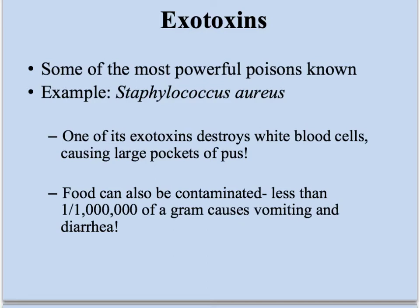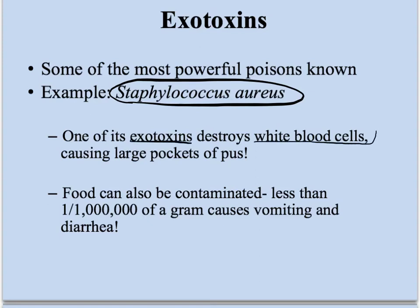Exotoxins are some of the most powerful poisons known. Staphylococcus aureus — one of its exotoxins destroys the white blood cells, which is why there's so much pus in staph infections. With Staphylococcus aureus, the exotoxin actually hunts down white blood cells and kills them. You can also contaminate food with this exotoxin — less than one one-millionth of a gram causes vomiting and diarrhea. It's extremely toxic.